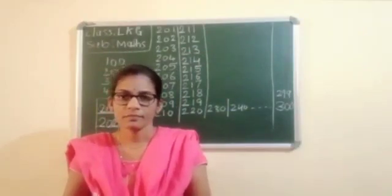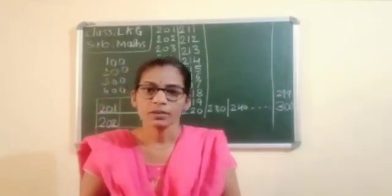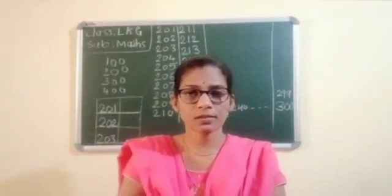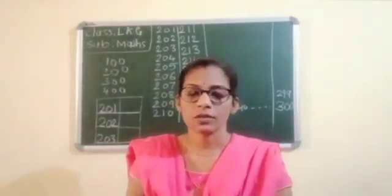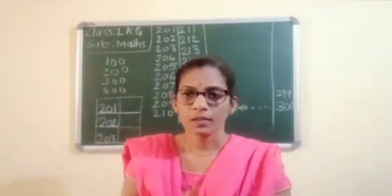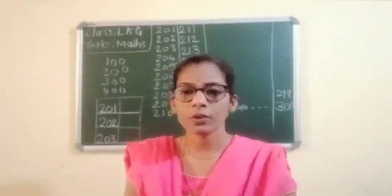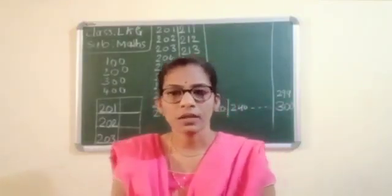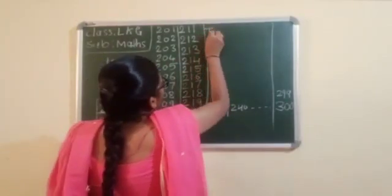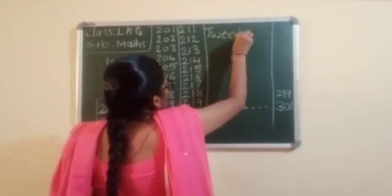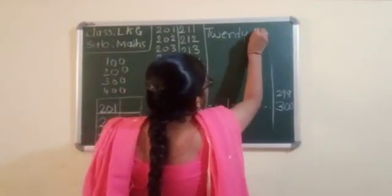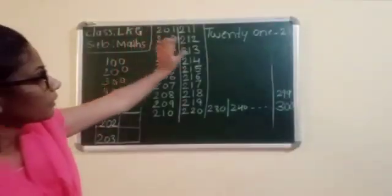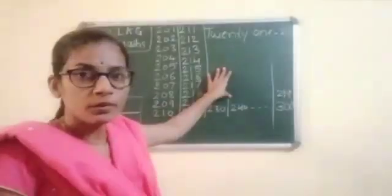Tell me the spelling of 20. Yes — T, W, E, N, T, Y. You must and should know the spelling of 20. I will write here 21. Already you know the numbers 1 to 10. Twenty-one: T, W, E, N, T, Y — then 1. Only the 1 is added after twenty.